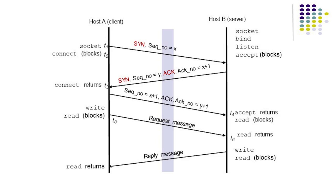When client A wishes to initiate a session, it performs an active open. This step involves making a socket call at time t1 and a connection call at time t2 that initiates the TCP connection. This action causes the client TCP module to initiate the three-way handshake. When the server TCP receives the first SYN, it returns a segment with an ACK and its own SYN number. When the client TCP receives this ACK, the connect call returns at time t3 and the client sends an ACK. Upon receiving the ACK, the accept call returns at time t4 in the server, and the server is ready to read data.